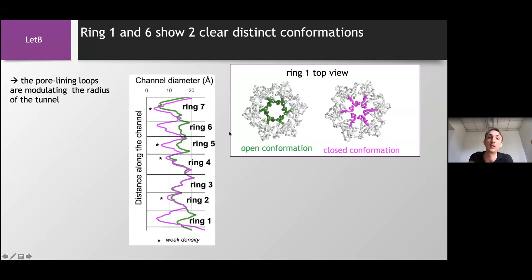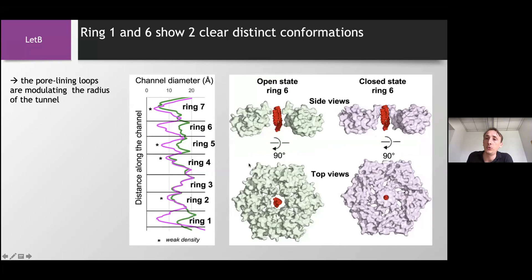So now if we measure the diameter of these rings here you can see the expected diameter from ring one to ring seven and we'll just concentrate again on the rings where the densities are the more trustable, so ring one and ring six. And you can see how the diameter changes from about five angstrom in the closed conformation to about 15 angstrom in the open conformation. So meaning that these pore lining loops are really modulating the radius of the tunnel formed by LetB.